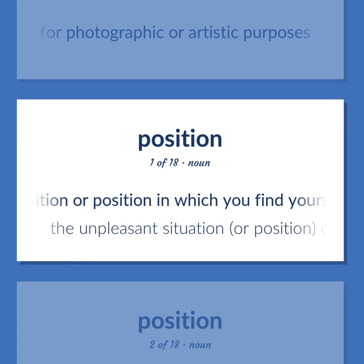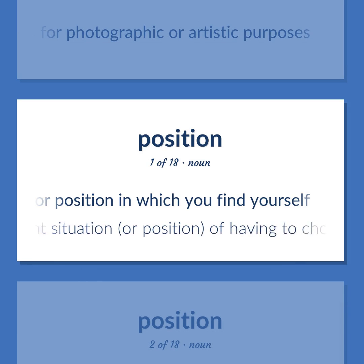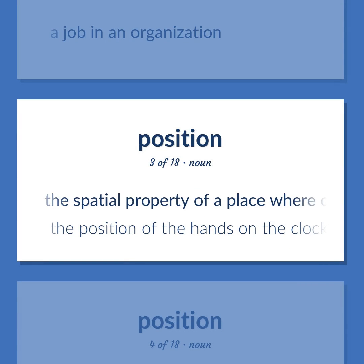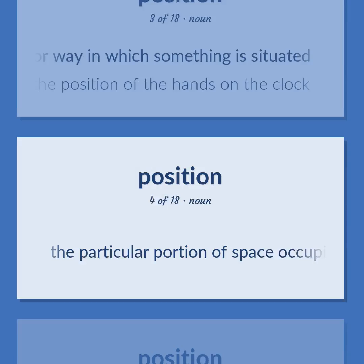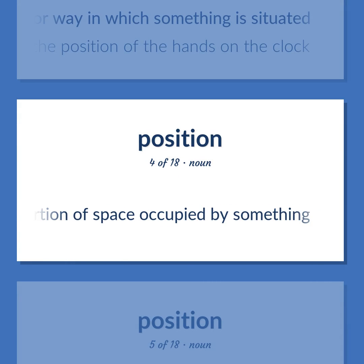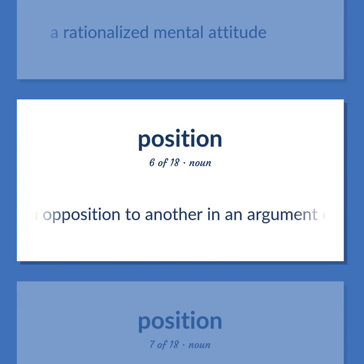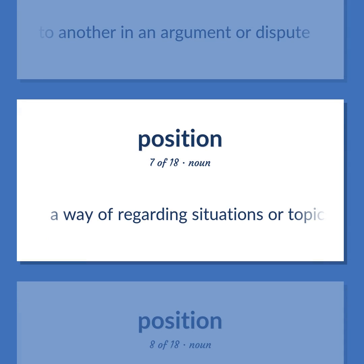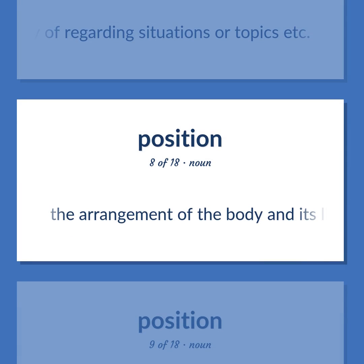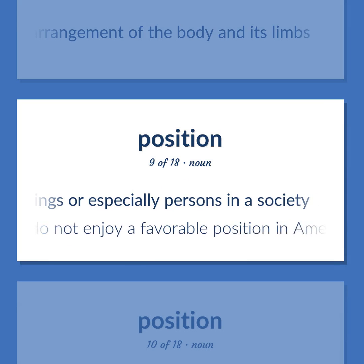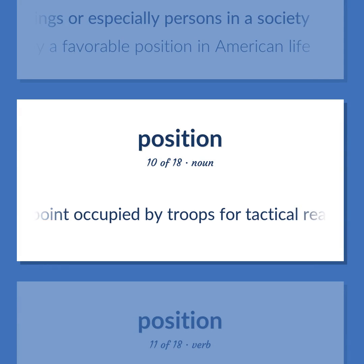Position: A condition or position in which you find yourself. The unpleasant situation of having to choose between two evils. A job in an organization. The spatial property of a place where or way in which something is situated — the position of the hands on the clock. The particular portion of space occupied by something. A rationalized mental attitude. An opinion held in opposition to another in an argument or dispute. A way of regarding situations or topics. The arrangement of the body and its limbs. The relative position or standing of things or persons in a society — atheists do not enjoy a favorable position in American life. A point occupied by troops for tactical reasons.